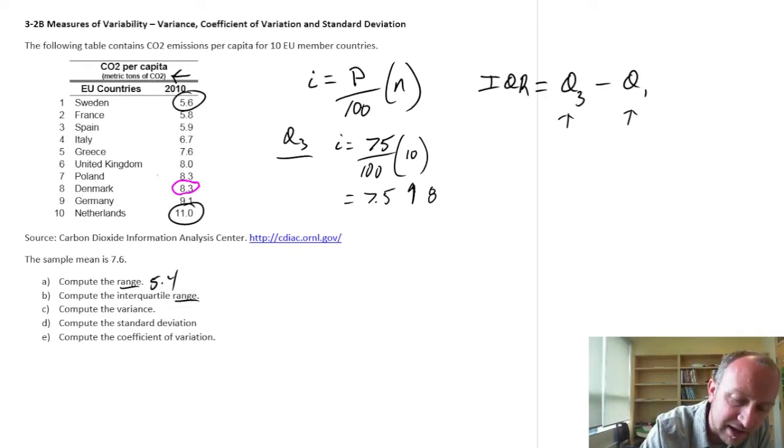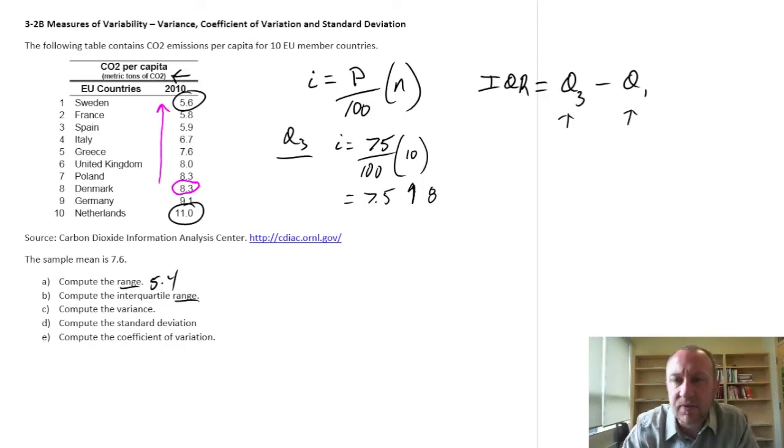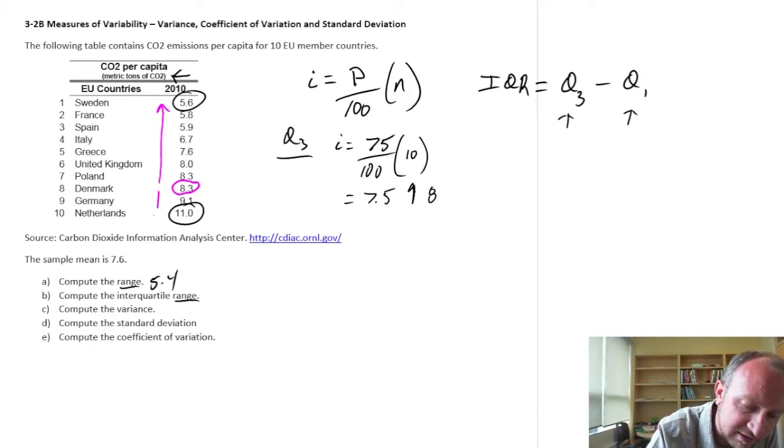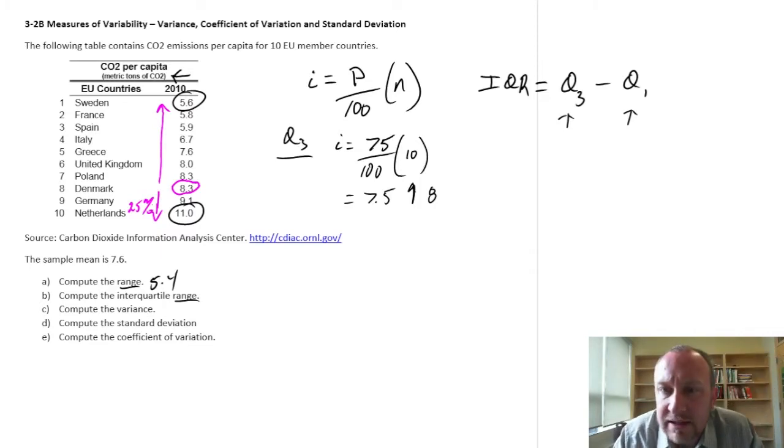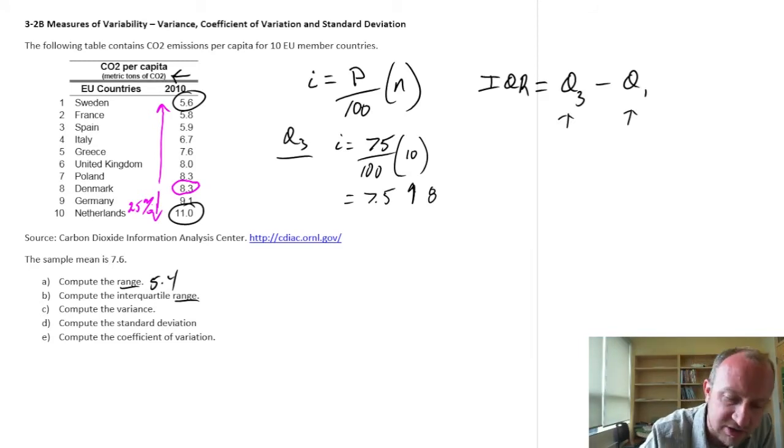What that means is that 75% of the values in that data set are less than or equal to 8.3, which means that 25% are greater than or equal to 8.3. Those are the observations that we're going to be ignoring in this calculation of interquartile range. So 8.3 is our Q3 value.